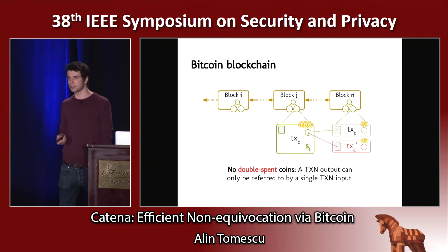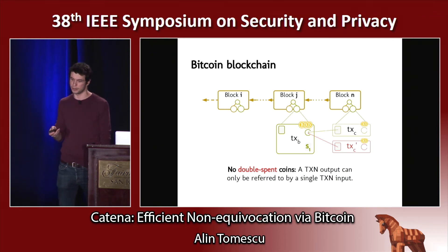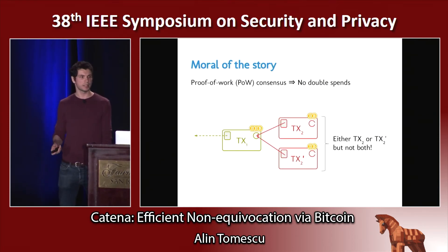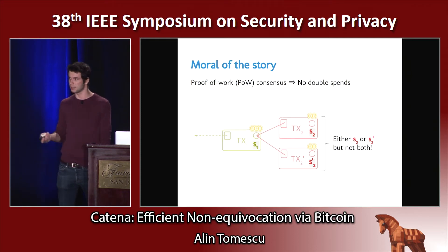Importantly, what Bitcoin actually guarantees is there cannot be double spends. Bitcoin maintains a very simple invariant: a transaction output can only be referred to by a single transaction input. So you cannot have two different transactions with inputs pointing to the same output — Bitcoin miners prevent that. The moral of the story is that either TX2 can be in the blockchain or TX2 prime, but not both. When I first realized this, I thought it was really cool: if we can put statements in these transactions, we can also implicitly prevent equivocation — we can either have S2 or S2 prime, but not both. This is the key idea behind Katina.